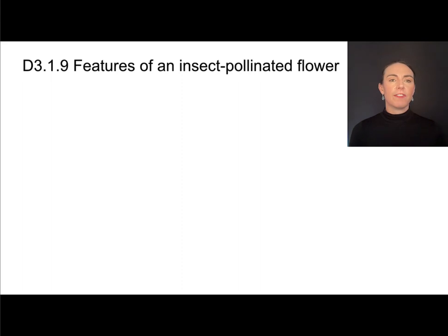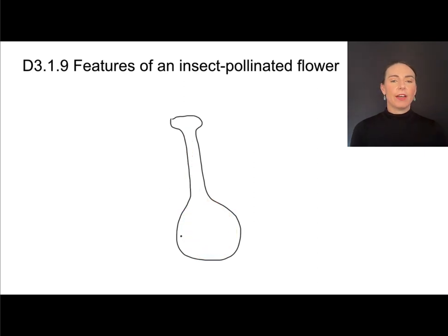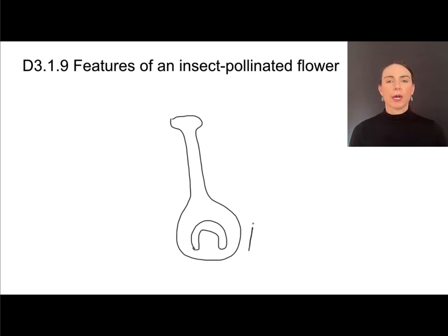Starting with the female reproductive organ, the carpel: the carpel has the stigma, the style, and the ovary. The stigma is the top part, below it is the long style, and then the ovary. Inside the ovary is a structure called the ovule. That's the carpel, the female reproductive organ. The male reproductive organs, called the stamen, consist of two parts: the filament and the anther, and it's the anther that is the site of meiosis. There are usually several stamens; some flowers might have four, some might have 400.